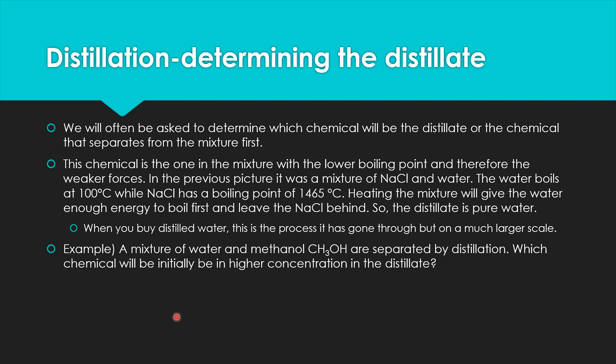To determine what the distillate is, we are often asked in AP Chem questions to identify which chemical will be the distillate — the chemical that separates from the mixture first. This is the one with a lower boiling point, and because it has a lower boiling point, it has weaker intermolecular forces. For example, water boils at 100°C while sodium chloride doesn't boil until 1465°C. So if we heat that mixture, the water is the only part that leaves, and our distillate is pure water. This is why we drink distilled water — it's been boiled and gone through this process.